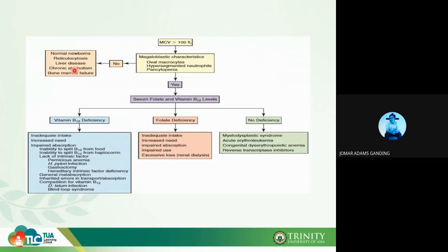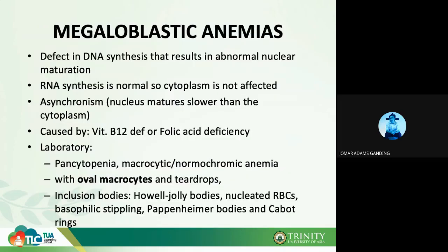Megaloblastic anemias are defects in DNA synthesis resulting in abnormal nuclear maturation. RNA synthesis is normal, so the cytoplasm is unaffected — only the nucleus is impacted. An asynchronism is observed where the nucleus matures slower than the cytoplasm, unlike normal RBC development where the nucleus progressively shrinks and eventually disappears.